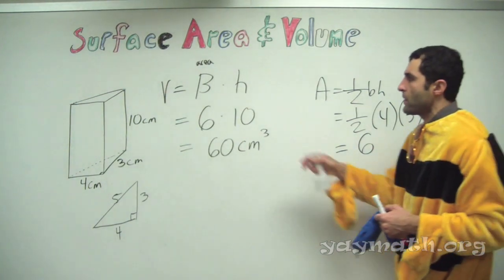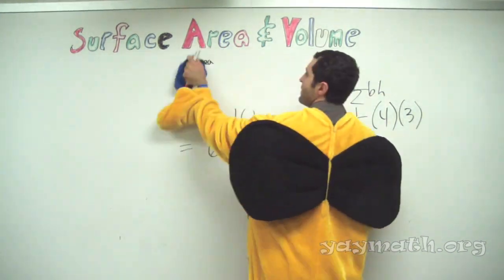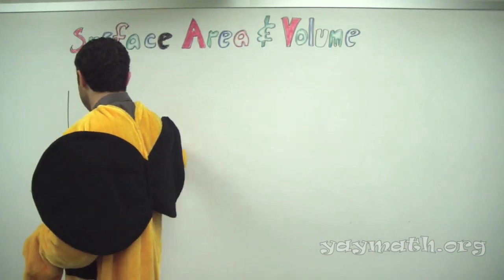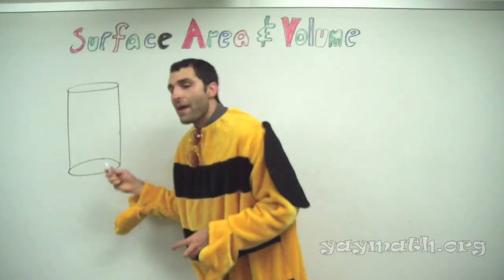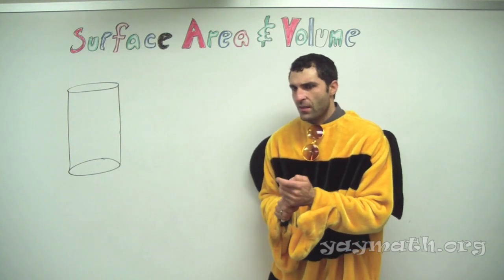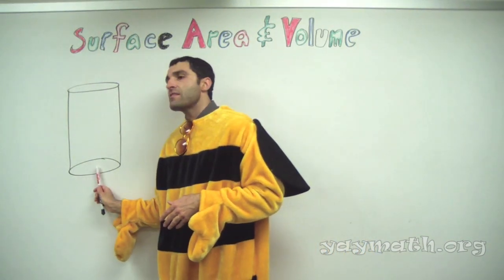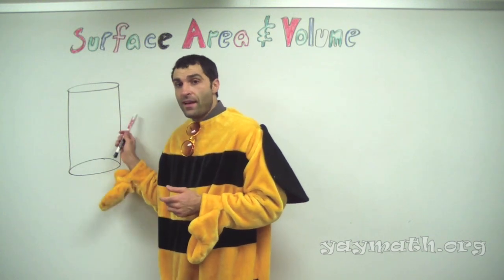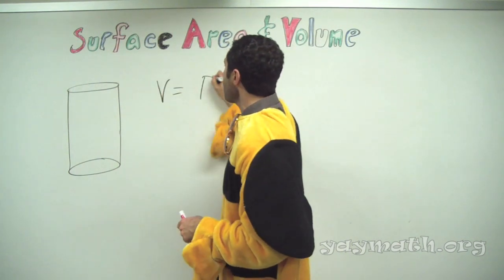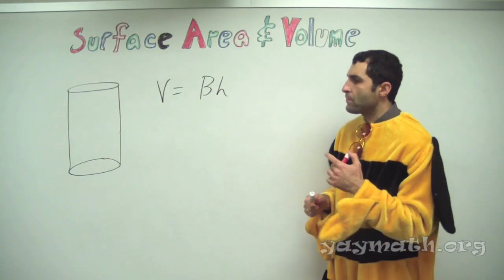Volume is kind of straightforward once you understand — it's area of the base times the number of stacks. Does a cylinder have the same attributes as a prism? Yes, because if you open it up, the base is a circle. So the volume of a cylinder is also big B times height.